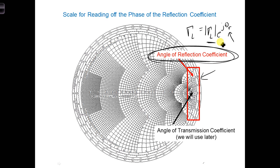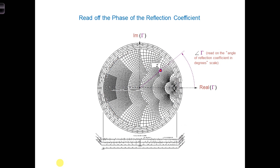And the magnitude, of course, we just saw how to do that. To find theta r, we draw a straight line from the center of the Smith chart through the impedance dot and through this angle of reflection coefficient in degrees scale on the outside of the Smith chart. The value that you read off here is the reflection coefficient in degrees, so that would give you theta r in degrees.